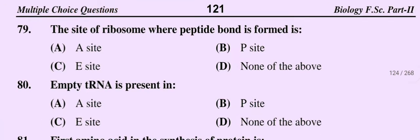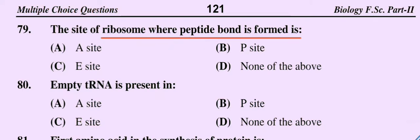Question number 79. The site of the ribosome where the peptide bond is formed is: option A, A-site; option B, P-site; option C, E-site; option D, none of the above. The correct option is option B, P-site.